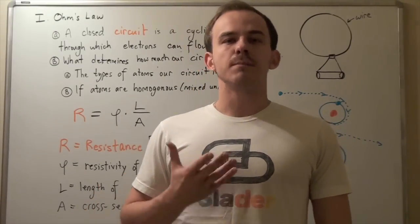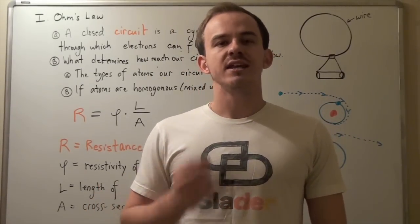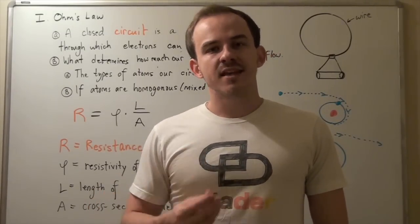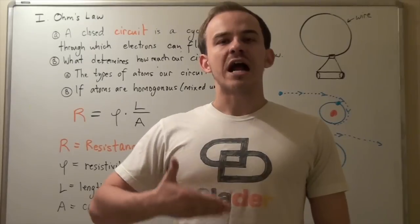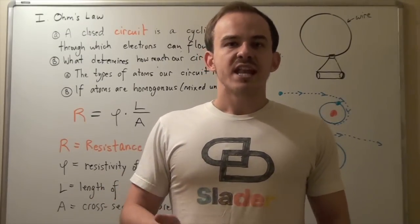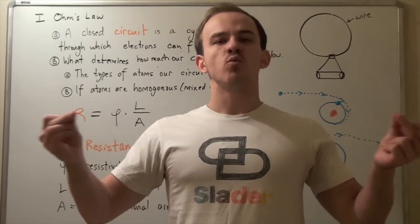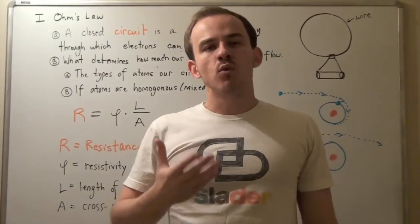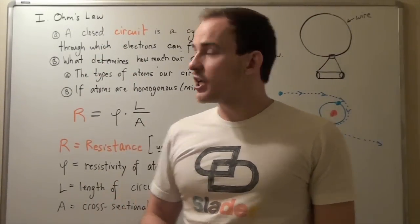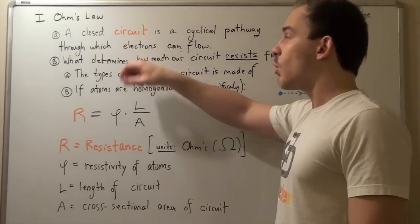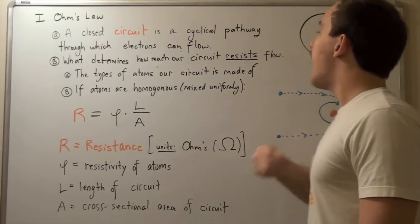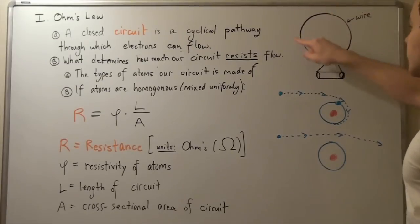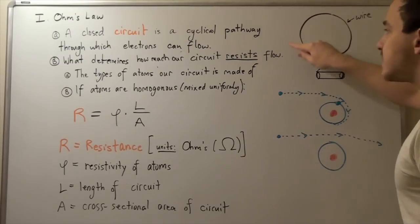In this lecture, we're going to talk about the movement of electrons in a closed circuit. A closed circuit is simply a cyclical pathway through which our electrons can flow. For example, we can take a long wire, loop it into a circle, tie the two ends off, and we'll form a closed circuit. Within this closed circuit, our electrons will be able to flow in a cyclical manner from this point and back to that same point.